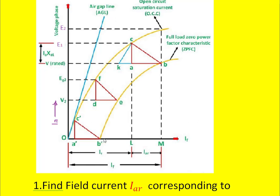From the zero power factor full load characteristic test, let the armature current and the field current give point B. This point indicates that the terminal voltage is rated, the armature current is rated, and the corresponding field current is this value.